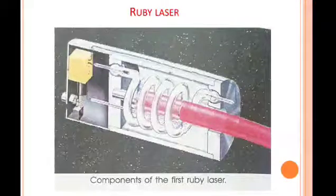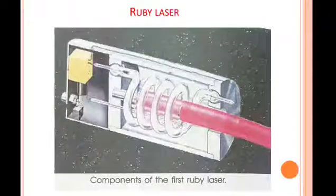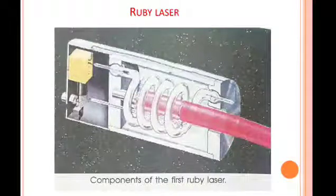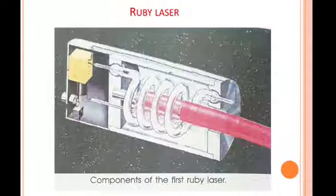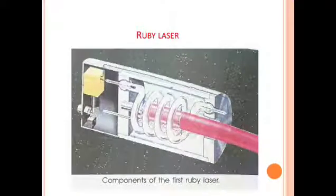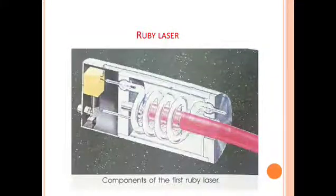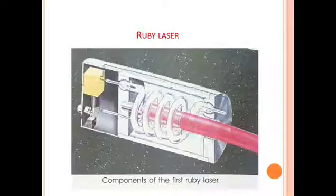Ruby laser belongs to the class of solid-state lasers. Historically it was the first laser and it was invented by Theodor Maiman in 1960. The ruby rod is a crystal which is made by aluminium oxide doped with chromium ions. Here the chromium ions cause the laser action.